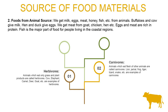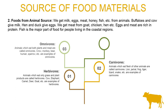Next are carnivores. The animals which eat the flesh of other animals are called carnivores. For example, lion, jackal, frog, tiger, lizard, snake, etc.